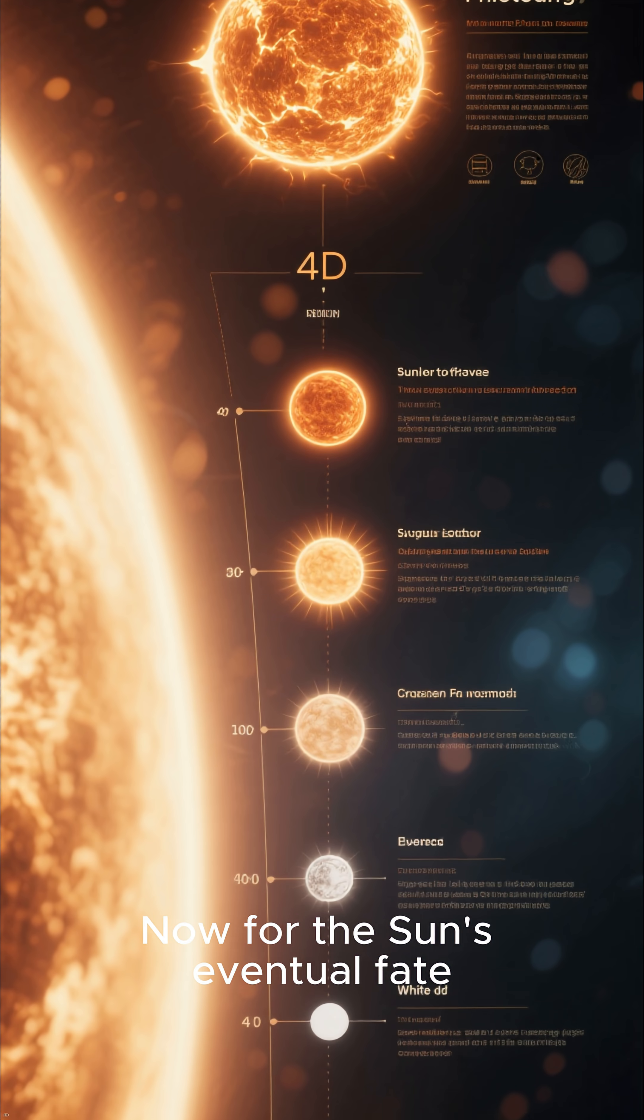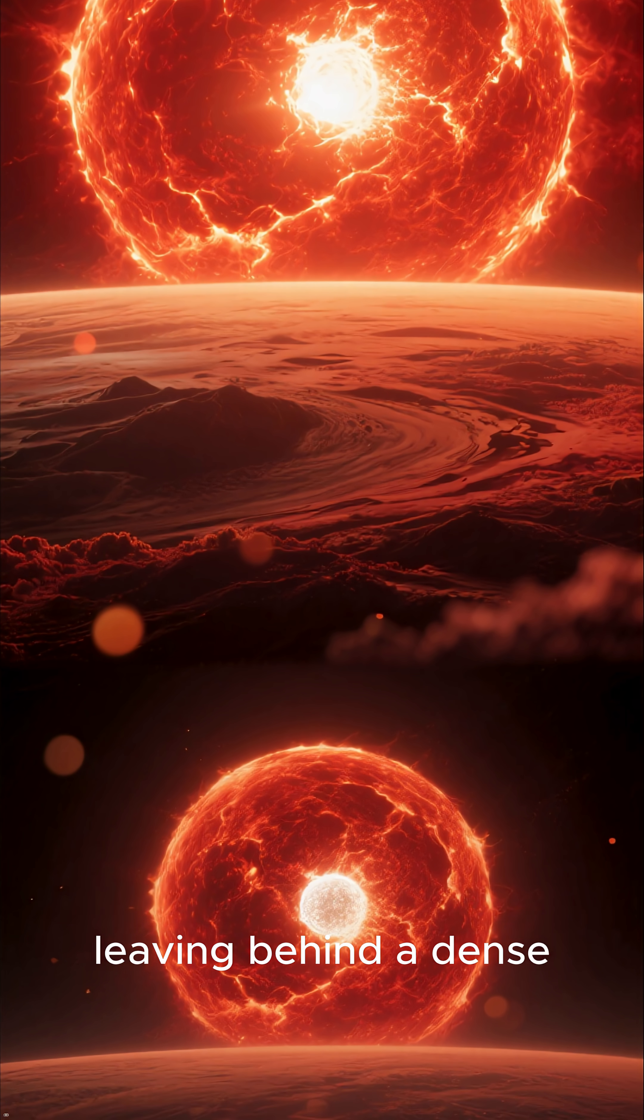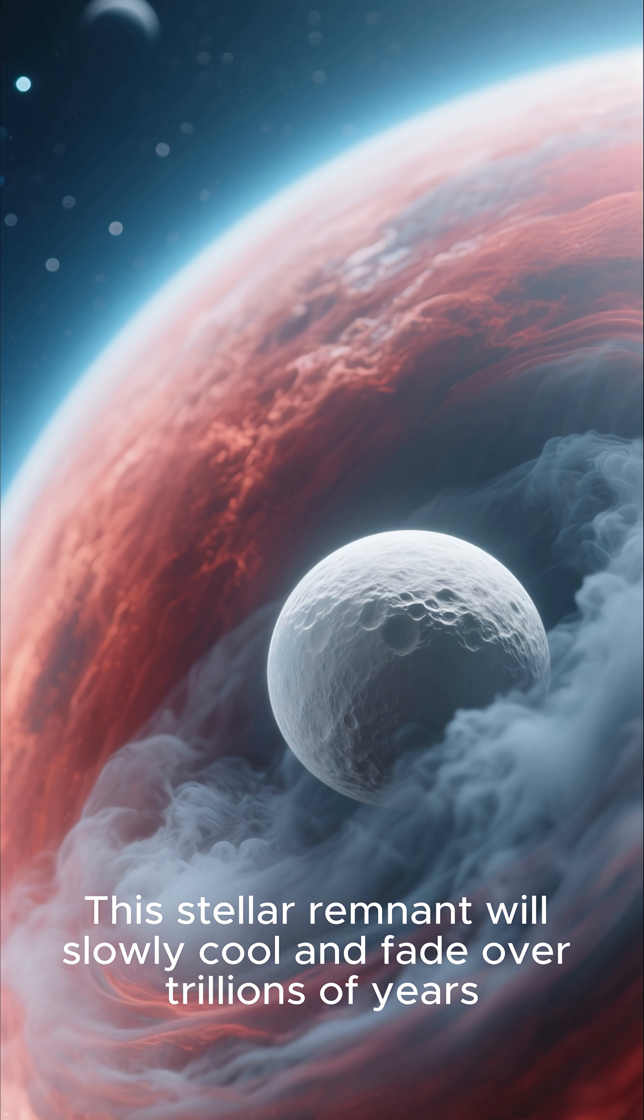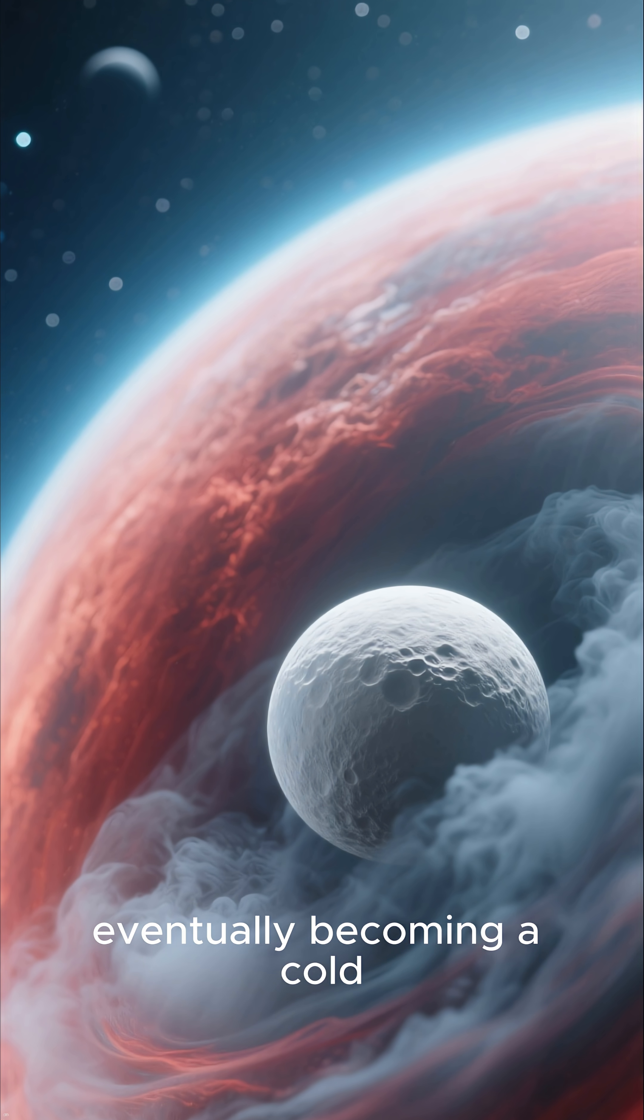A fading white dwarf. After its red giant phase, the Sun will shed its outer layers, leaving behind a dense, hot core known as a white dwarf. This stellar remnant will slowly cool and fade over trillions of years, eventually becoming a cold, dark ember.